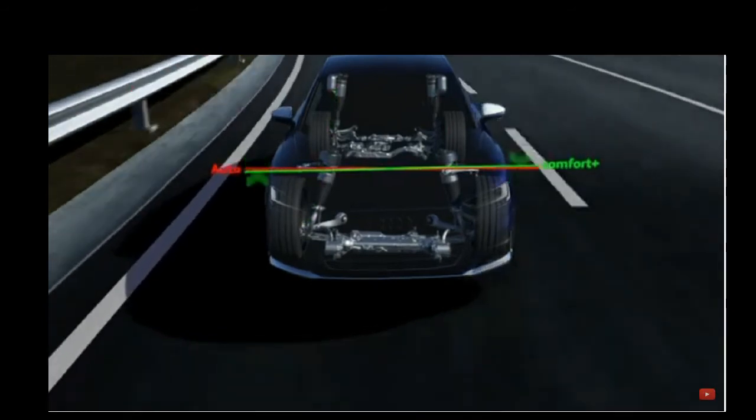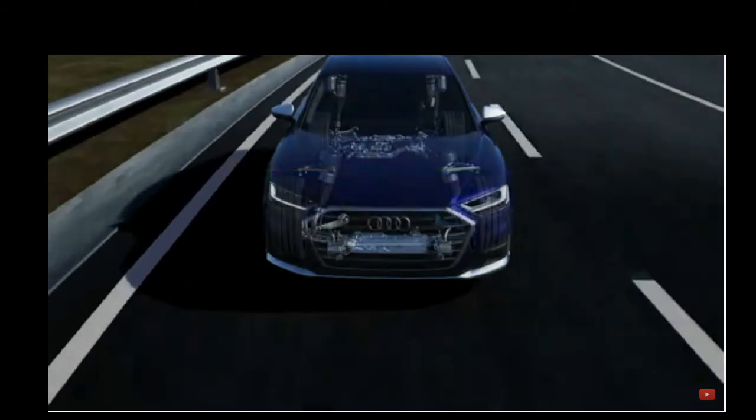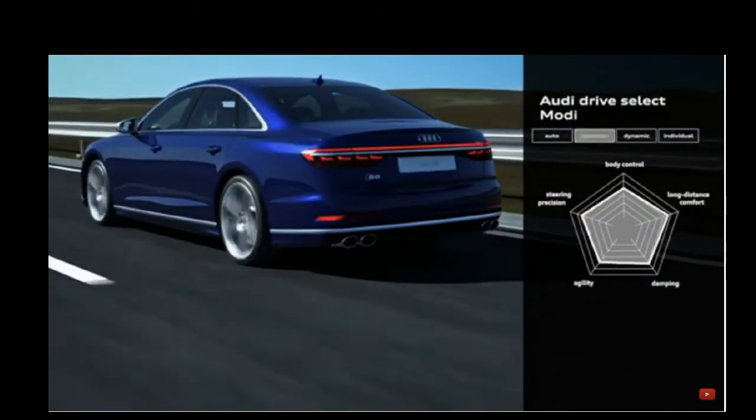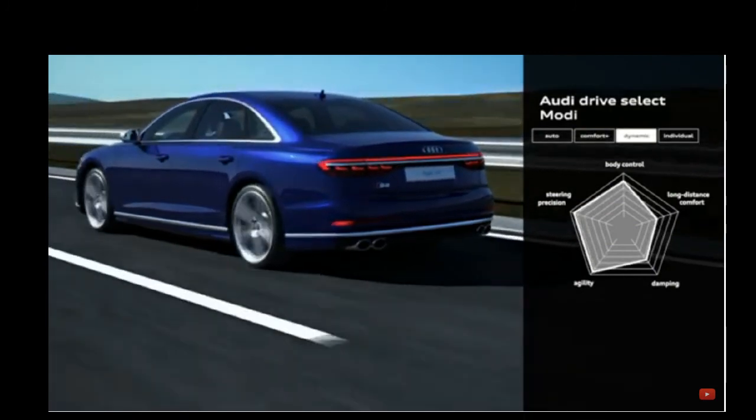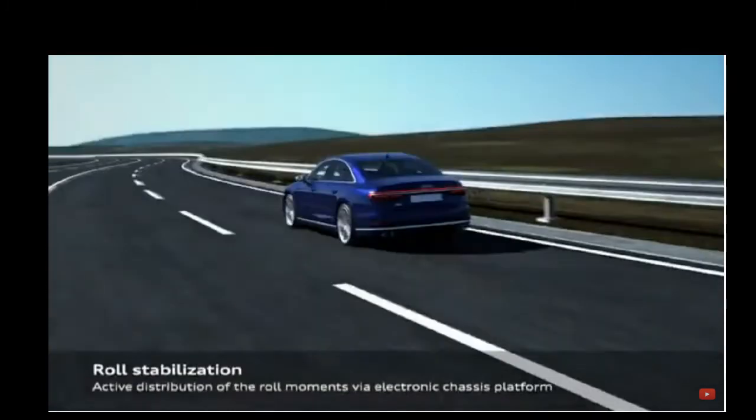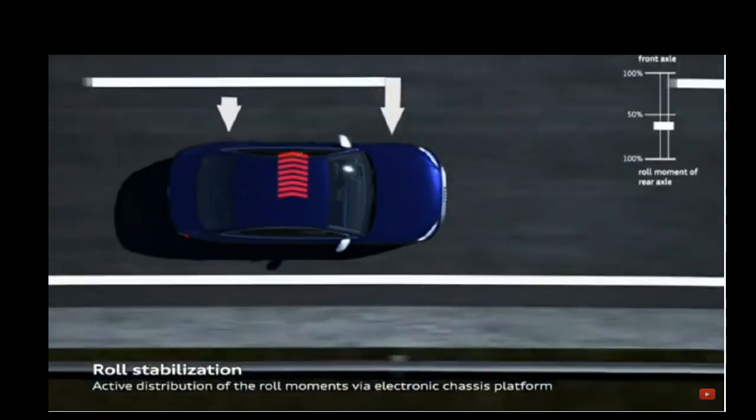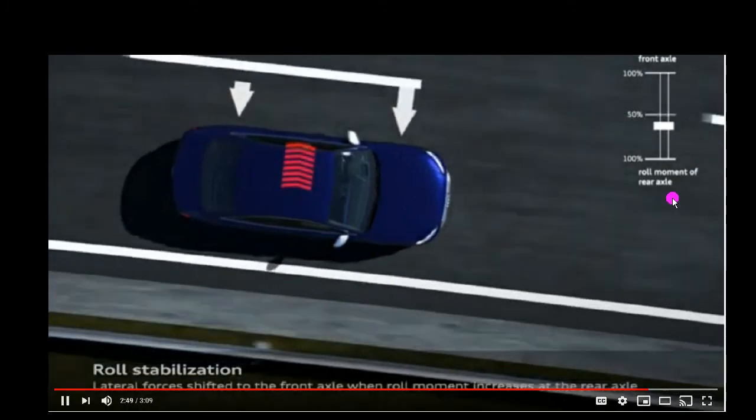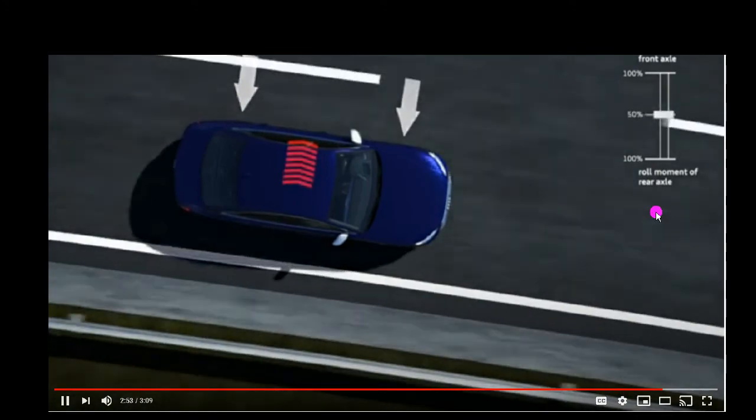You can see as we go around the curve it rotates the other way. You can see here the roll movement of the rear axle. We can control the sway bars in the front and rear to control the rolling of the car, which actually helps us go around the curve better.